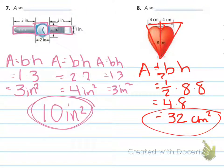All right, here are the answers for number 7 and 8. Number 7, I have a square in the middle and then the two rectangles on the side. I add them together, it's 10 inches squared.